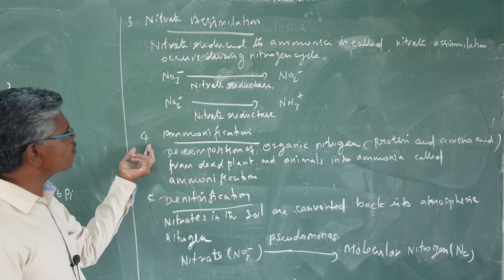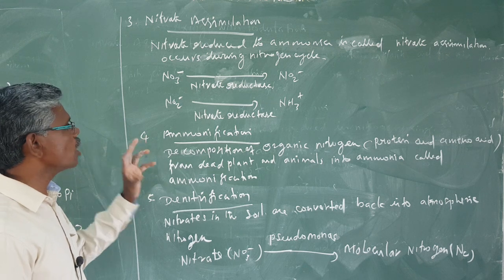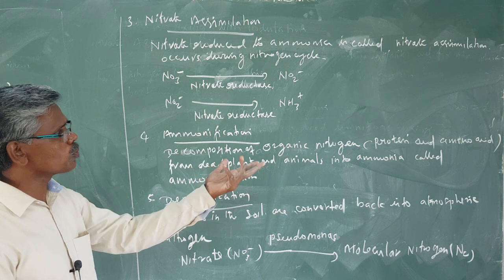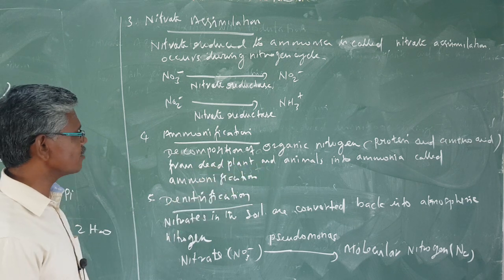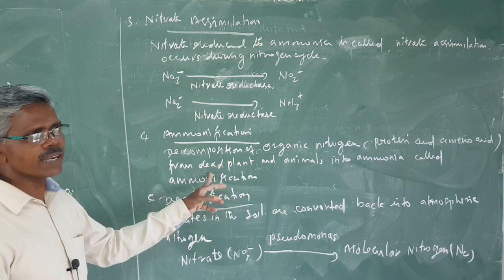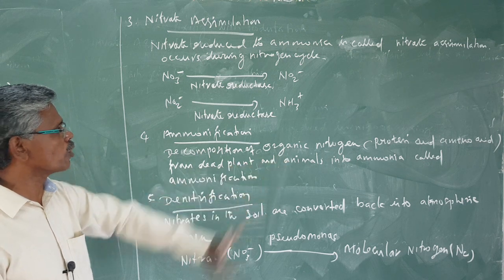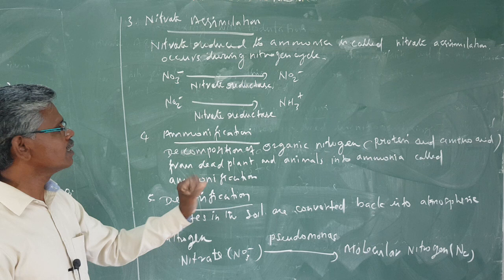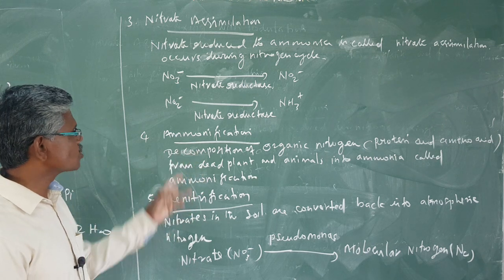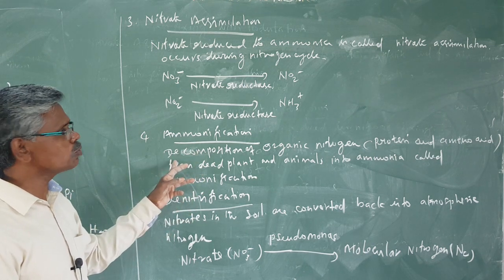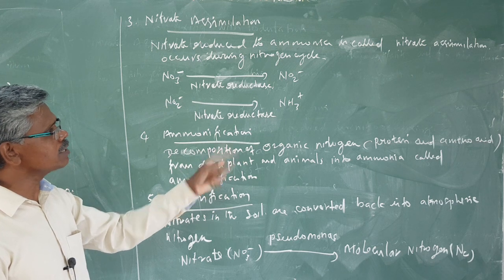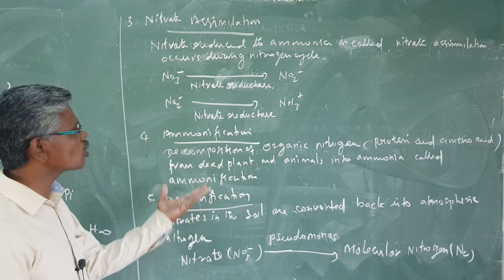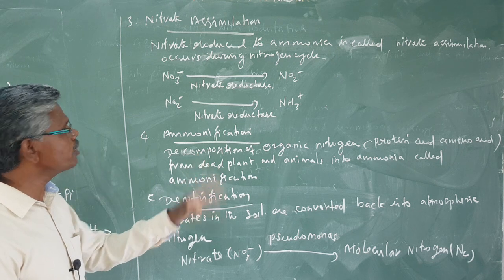The fourth process is ammonification — the formation of ammonia. It refers to the decomposing of organic nitrogen, for example from proteins and amino acids, from dead and decayed plant and animal matter. That process is called ammonification.